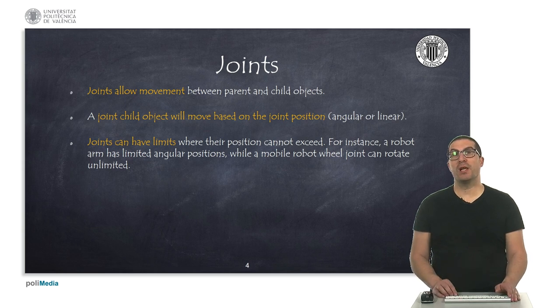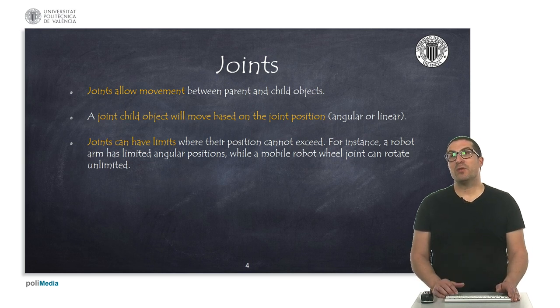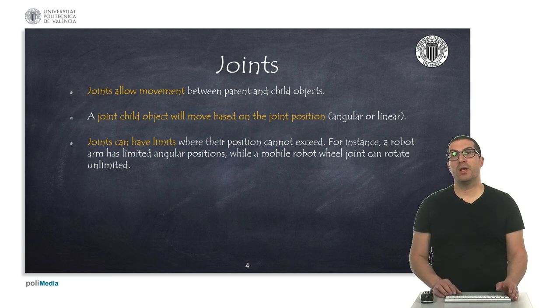Joints may have physical limits where the position must lay. This is clear in the case of a robot arm, while wheels of a mobile robot can rotate unlimited.